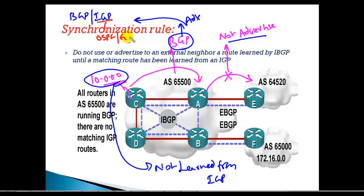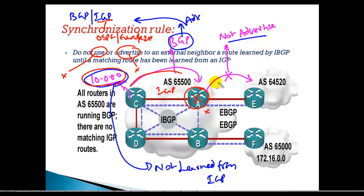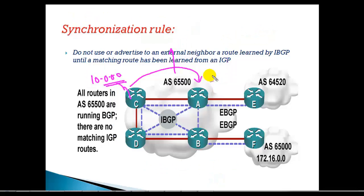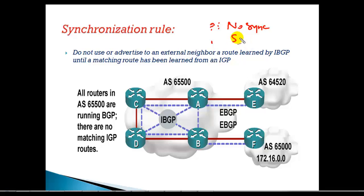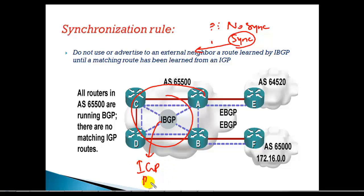IGP means any of the OSPF, EIGRP, or RIP protocols. Every network you advertise in BGP must also be advertised in your IGP. Only then will the border router use and advertise that route. It will not use or advertise any route unless the same matching route is also learned via IGP. In recent IOS, the synchronization rule is by default disabled with the 'no synchronization' command, but you can enable it with the 'synchronization' command. If you enable synchronization, it becomes mandatory to advertise each route in both your IGP and BGP.